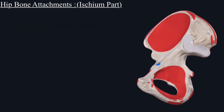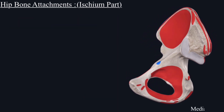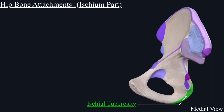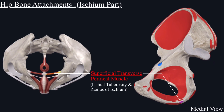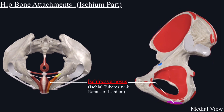Below is the ischial tuberosity and here is the internal surface of the ischial ramus. From the ischial tuberosity and ramus of the ischium originate two muscles — the superficial transverse perineal muscle and the ischiocavernosus muscle.